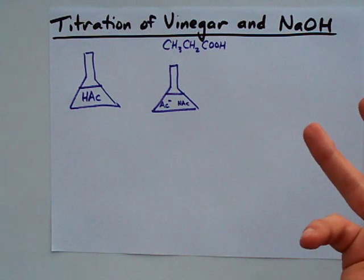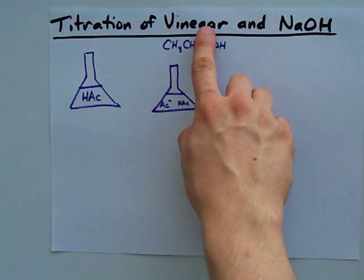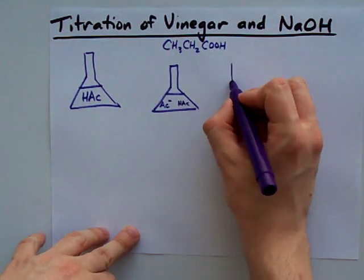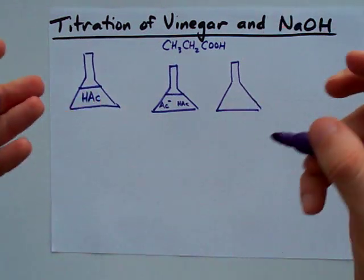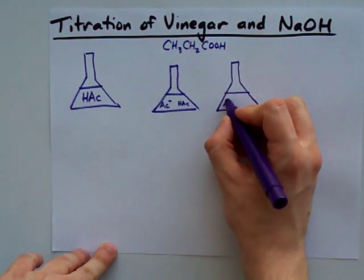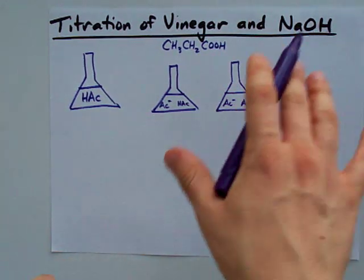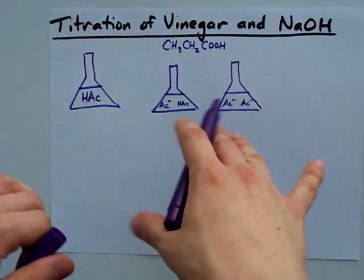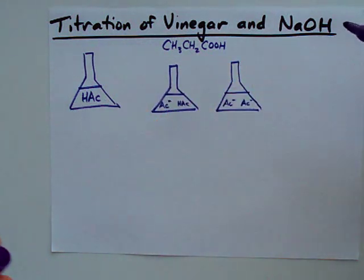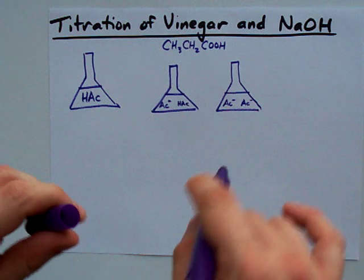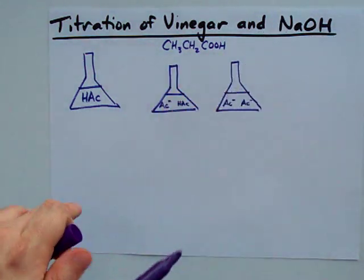Eventually, you're going to add just as much NaOH as you had of vinegar in the first place, and you'll know that because there won't be any acid left — all of it will be converted to AC-. Once we have AC- only, there are no H's that will make the solution acidic, and there's no leftover OH which will make the solution basic, as long as you didn't add too much NaOH.